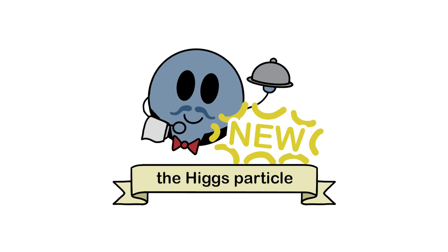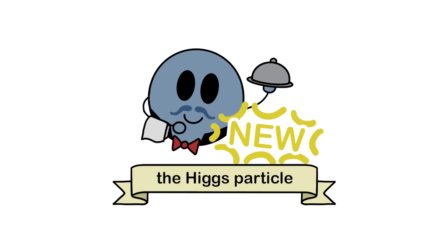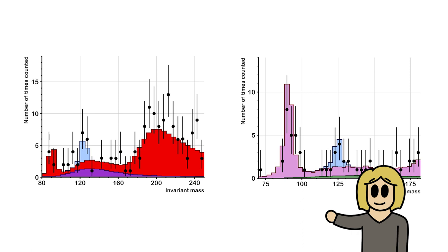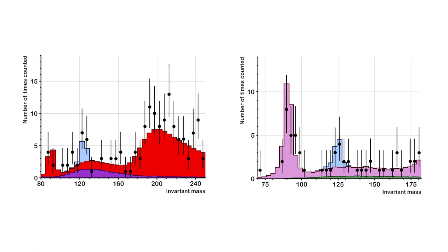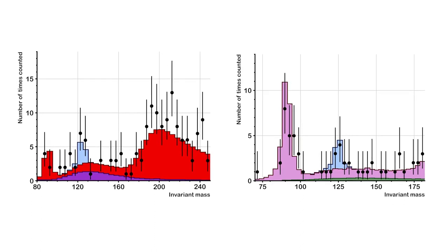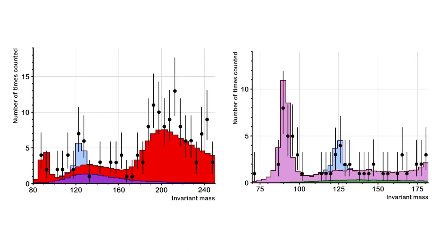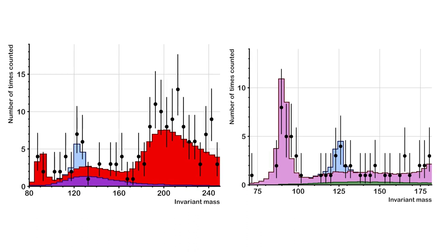The specific results presented were graphs like these. These graphs show the existence of a previously undiscovered particle and got particle physicists all over the world excited. But that might make you wonder why. Why are these graphs so great? What do they show exactly? And how do they prove the existence of a new particle?